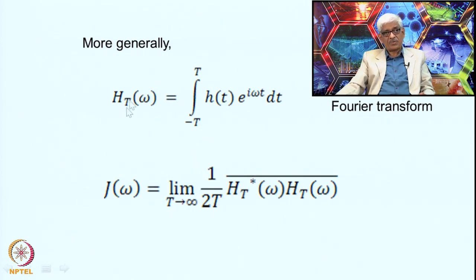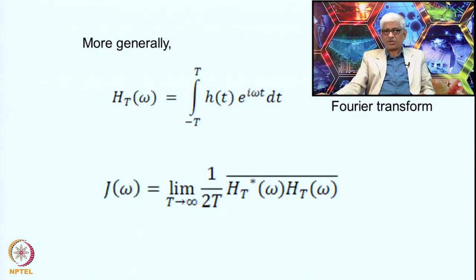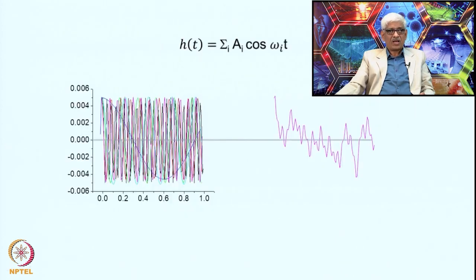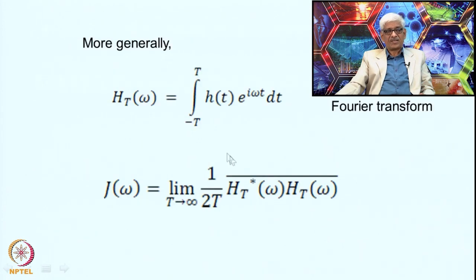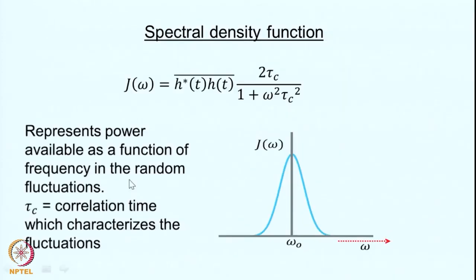If we plot T1 as a function of τc, T1 continuously decreases as τc increases, reaches a minimum, and then starts increasing. For ω₀τc > 1, T1 increases. This follows from the power available at the transition frequency: when ω₀τc ≫ 1, practically no power is available at the frequency of interest, so no transitions occur and T1 is very large. When ω₀τc = 1, maximum power is available and T1 is at its minimum. The spectral density function thus explains why T1 goes through a minimum.